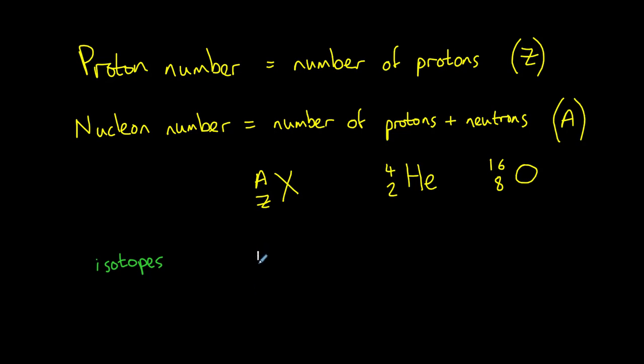For example, carbon can be found as carbon 12, carbon 13, and carbon 14. In fact, all three isotopes of carbon here can be found in your body.